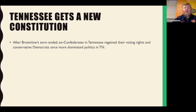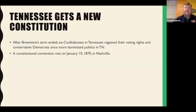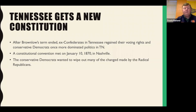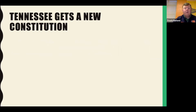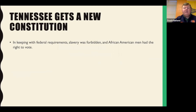After Brownlow's term ended, ex-Confederates in Tennessee regained their voting rights, and conservative Democrats once more dominated politics in Tennessee. A constitutional convention met on January 10th of 1870 in Nashville, and the conservative Democrats wanted to wipe out many of the changes made by the radical Republicans. Many provisions from the Constitution of 1834 were not changed in the new Constitution. In keeping with federal requirements, slavery was forbidden and African-American men had the right to vote — reflecting the 13th and 15th Amendments.